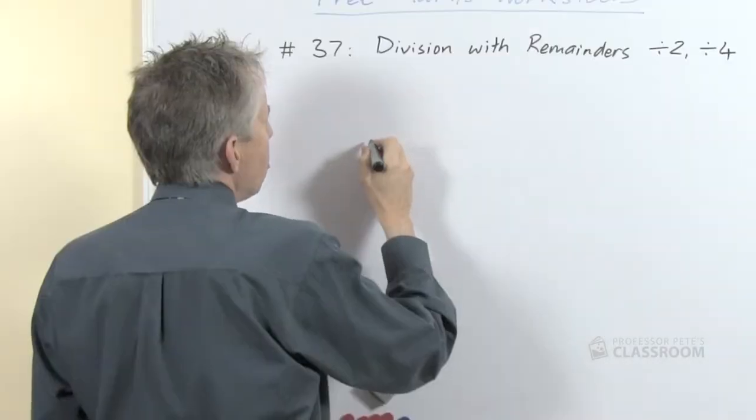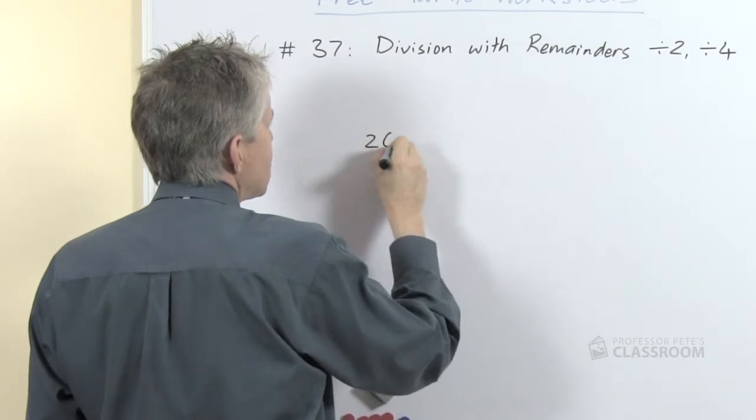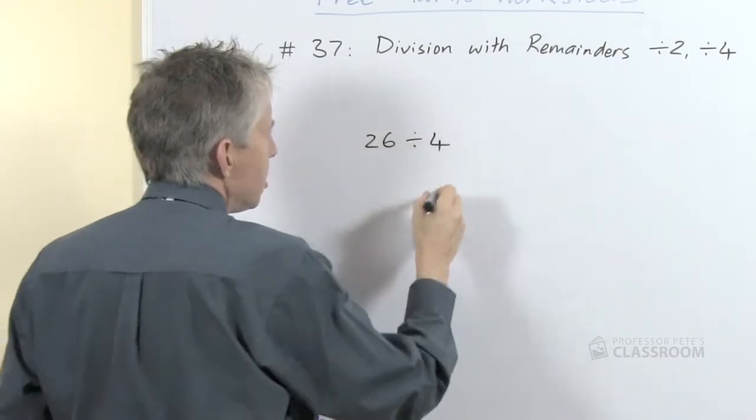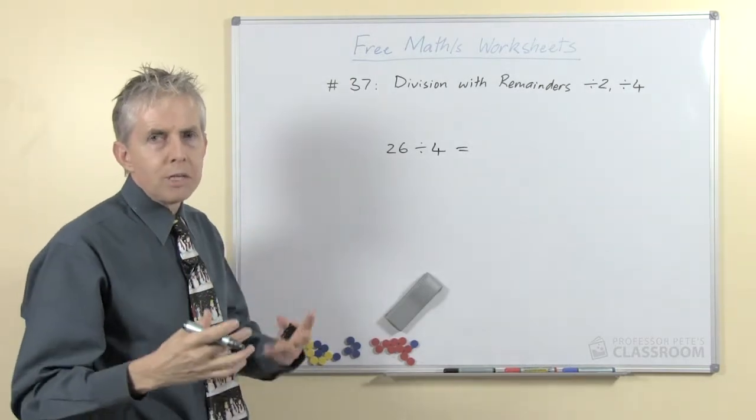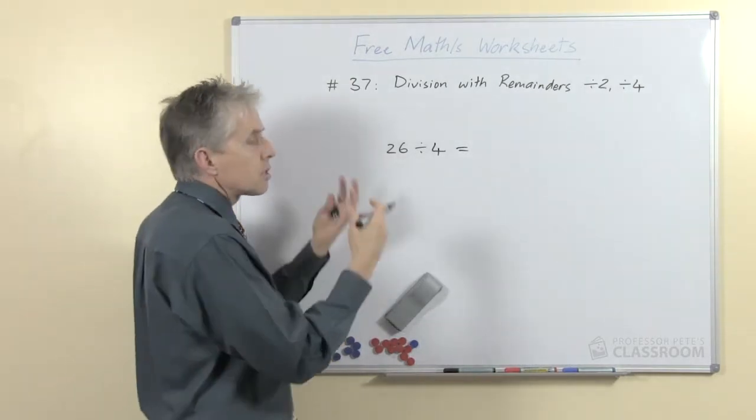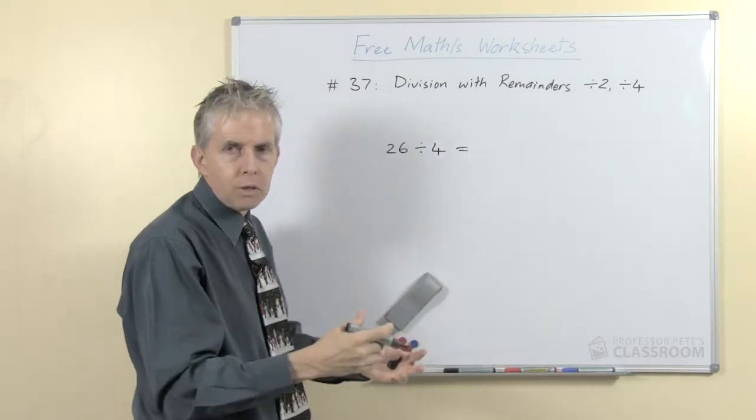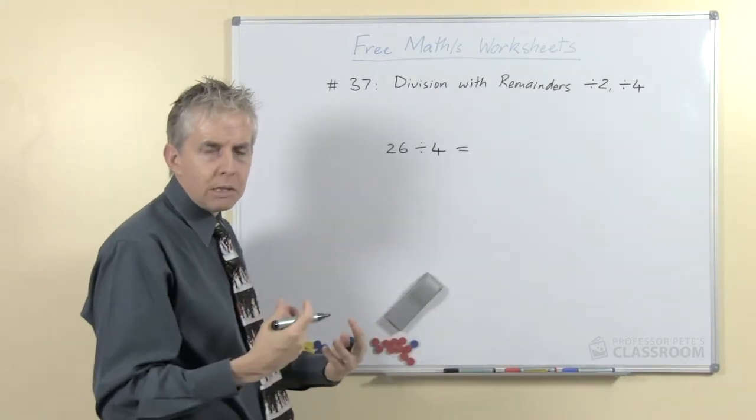Let's do a dividing by 4. What should we have this time? 26 divided by 4. Same process—we'll think, 'How many 4s can we take away from 26? What's the biggest multiple of 4 that's less than 26?'